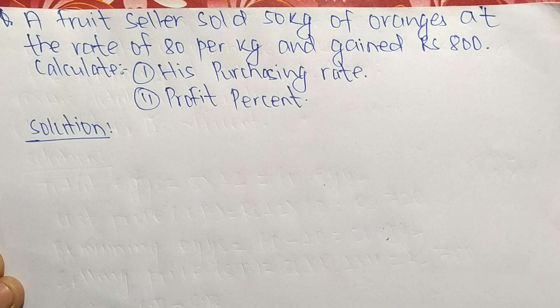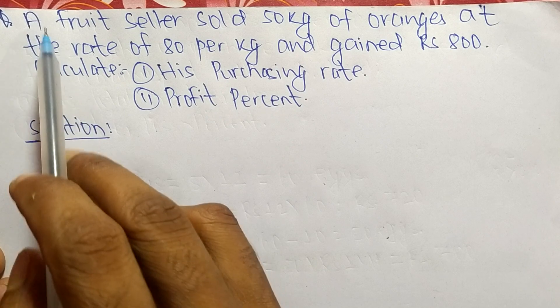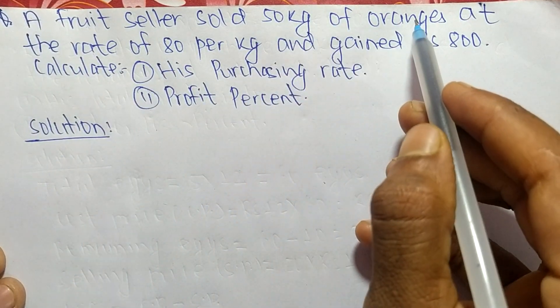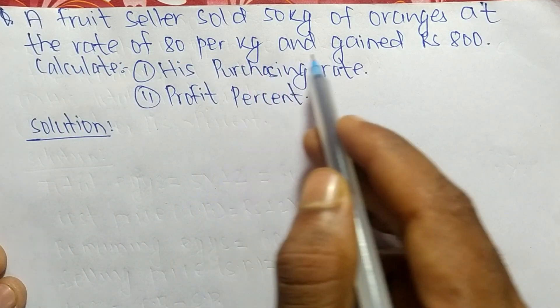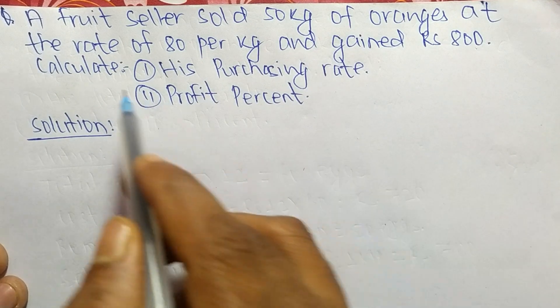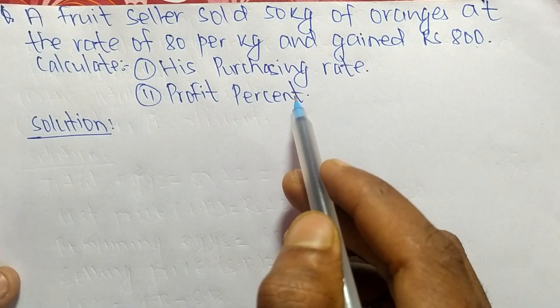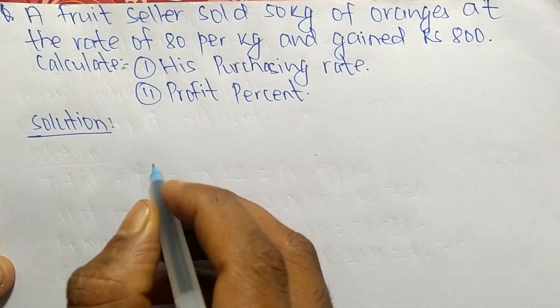Today in this video we are going to solve a profit and loss question. The question is: a fruit seller sold 50 kg of oranges at the rate of 80 per kg and gained Rs. 800. We have to calculate the purchasing rate and profit percent. First, let's find out what is given here.